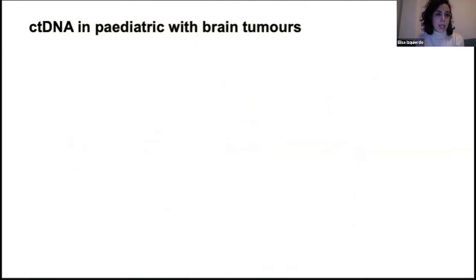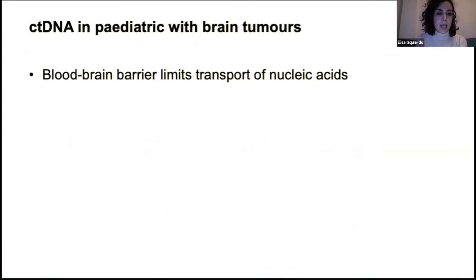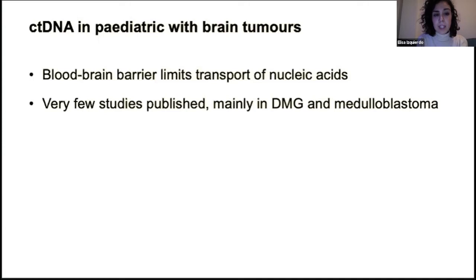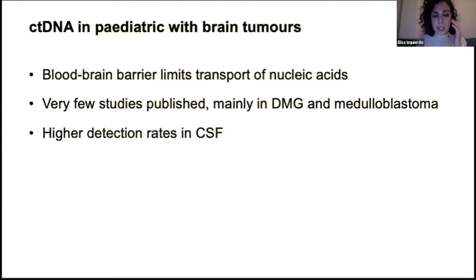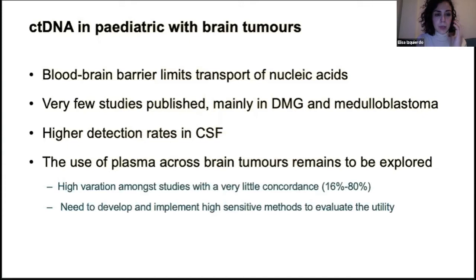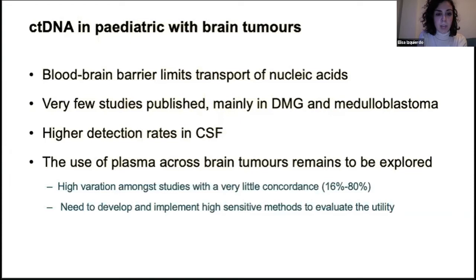Regarding ctDNA in pediatric patients with brain tumors, the blood-brain barrier limits the transport of nucleic acids, meaning glioma patients have the lowest levels of ctDNA in plasma. There are very few published studies, mainly in diffuse midline gliomas and medulloblastoma, and published work has found higher detection rates in cerebrospinal fluid compared to plasma. Plasma ctDNA detection across brain tumors shows high variation among studies, with concordance ranging from 16% to 80% of patients having detectable ctDNA, likely due to technical differences. There is a need to develop and implement high-sensitivity methods to evaluate the utility of plasma ctDNA in brain tumors.